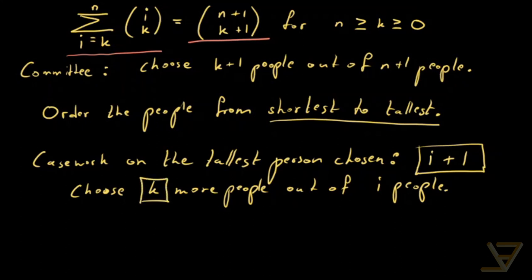So that gives us a sum of the form i choose k. But the question is what are the bounds on i?